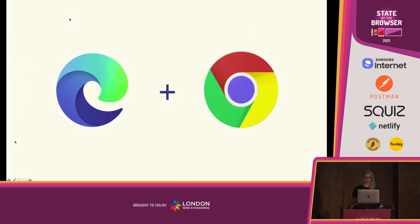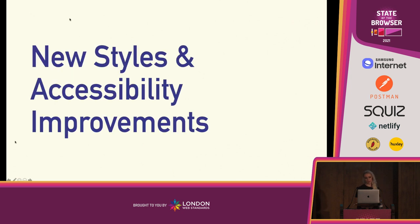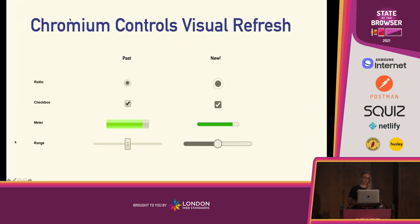Our first focus was improving the style of native controls in Chromium. We brought some of that accessibility work over into Chromium when we made that switch. With the new styles, the team landed on a much more modern and neutral look that we hope lessens the time spent on recreating form controls purely for styling purposes, while we work on the standards work to bring better control styling to browsers.